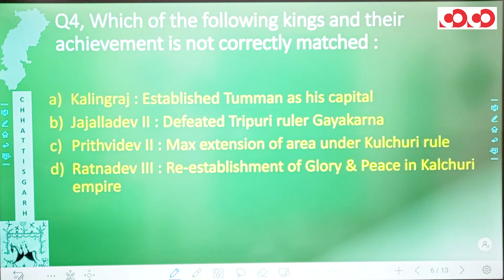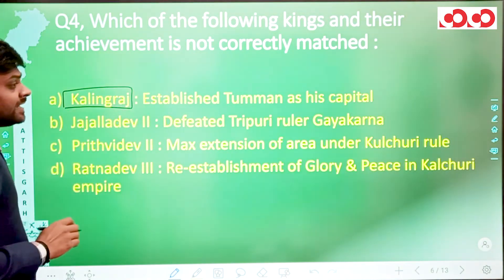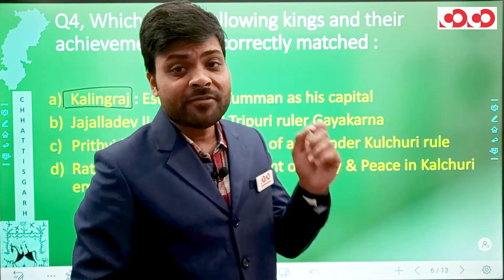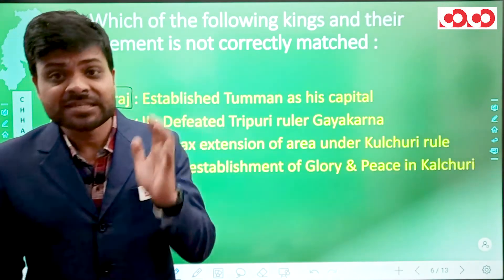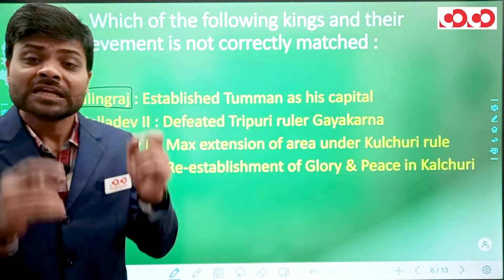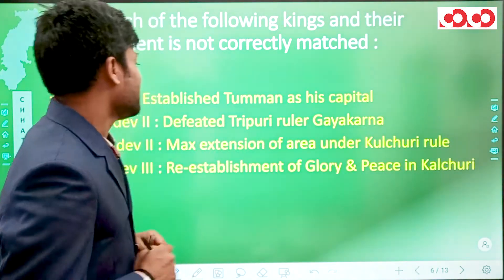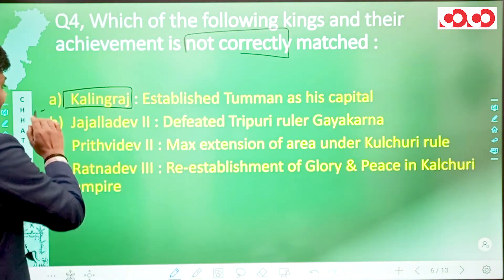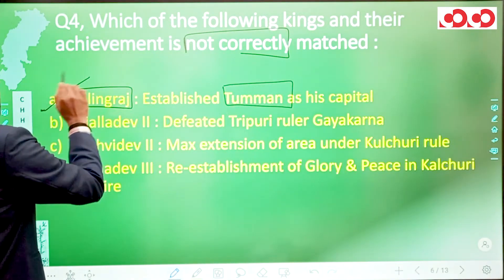Question 4 asks which of the following kings and their achievements is not correctly matched. Regarding Kalingraj: he was the real founder of Kulchuri rule in Chhattisgarh, established his capital at Tumman, and started ruling Chhattisgarh from there. So this statement regarding Kalingraj is correctly matched.